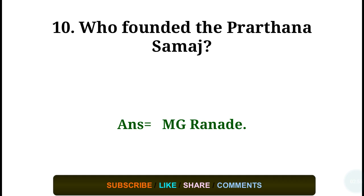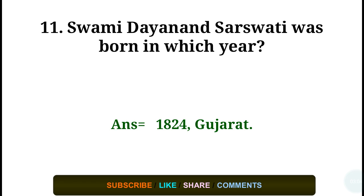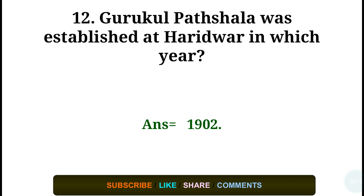Question number ten: Who founded the Bhartana Samaj? Answer: M.G. Ranade. Question number eleven: Swami Dayanand Saraswati was born in which year? Answer: In the year 1824 in Gujarat. Question number twelve: Gurukula Kangri was established at Haridwar in which year? Answer: 1904.